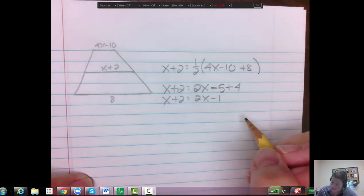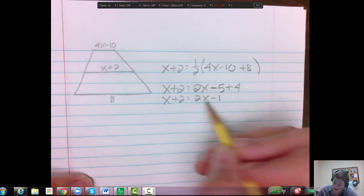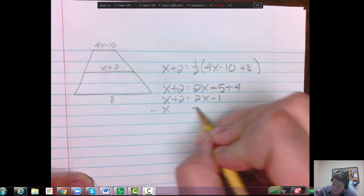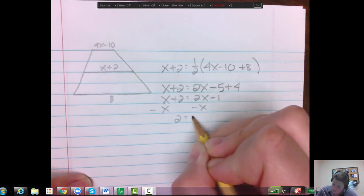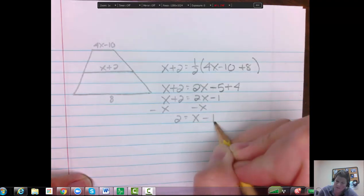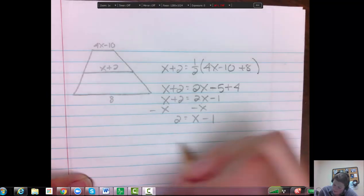Then here I could subtract the x this way, so minus my x, and I'll still have a 2 equals 2 minus 1 is 1x minus the 1. And then add the 1 over to get 3, so x is 3.